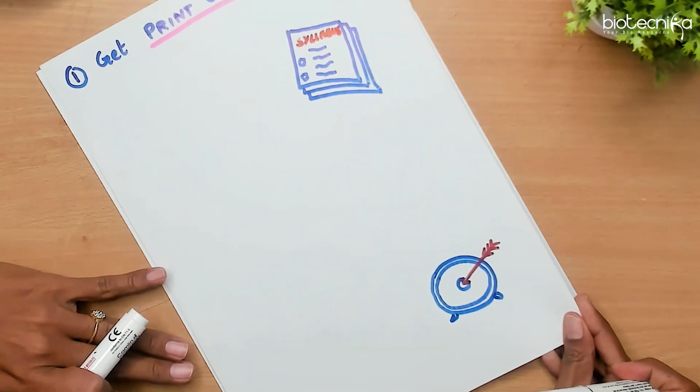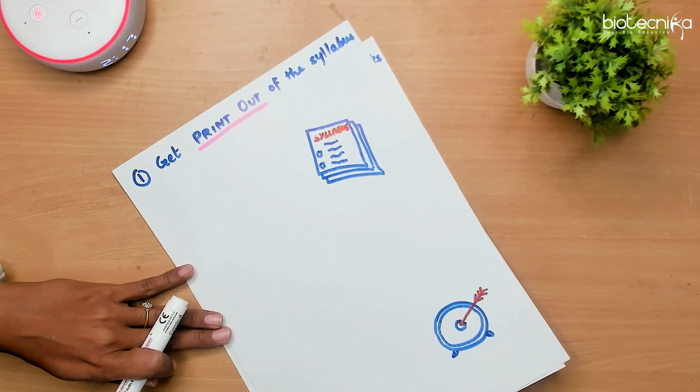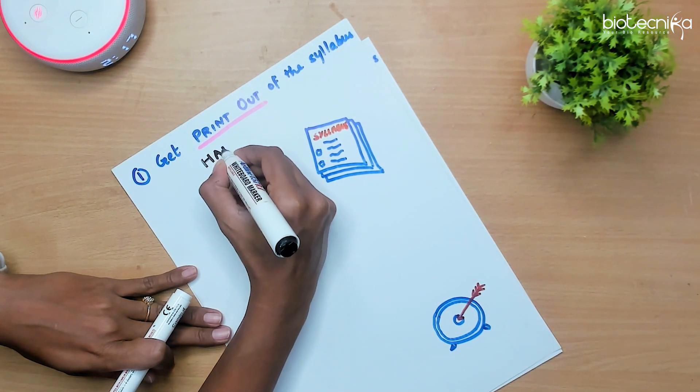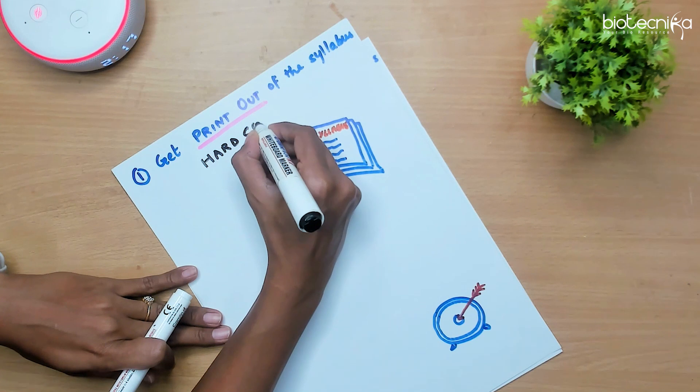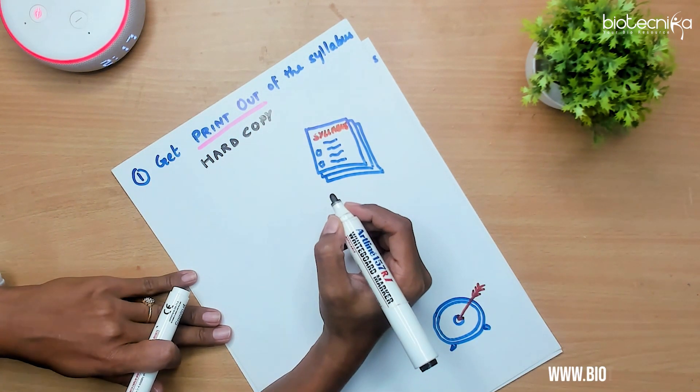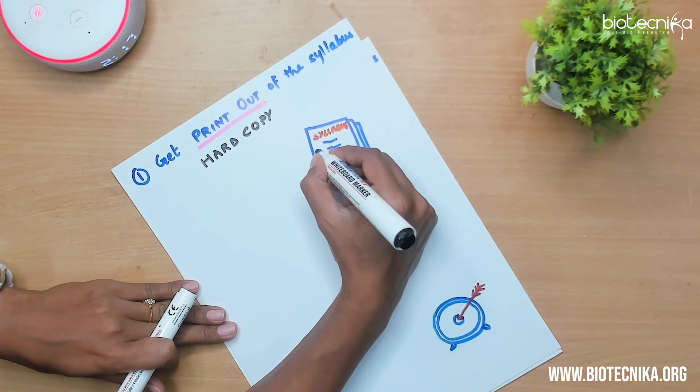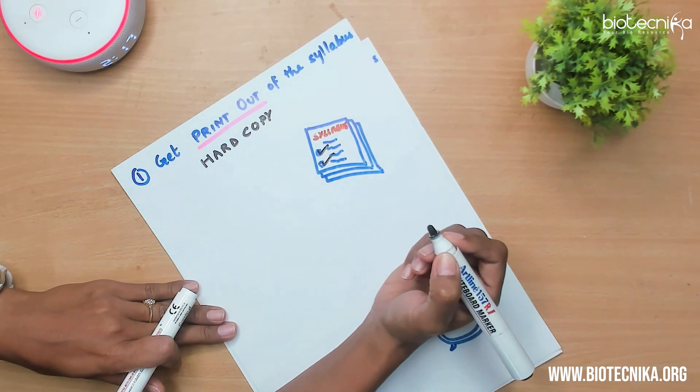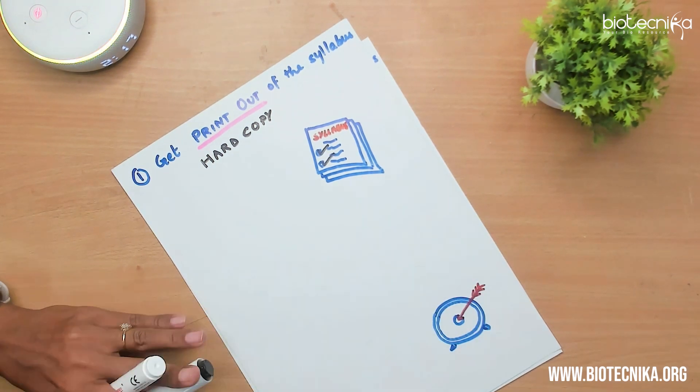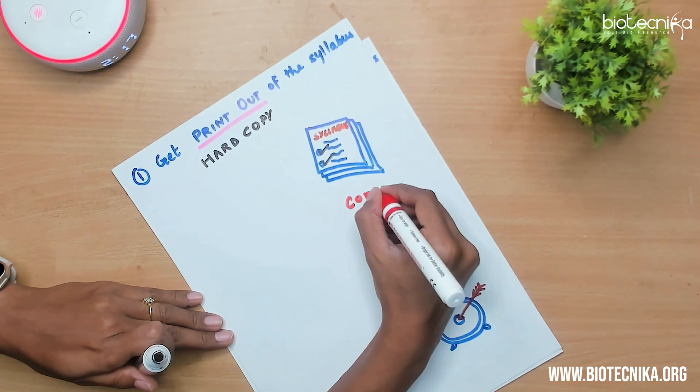Let's look at the first strategy. Get a printout of the syllabus. Yes, you heard me right. You need a hard copy, I am emphasizing on that. Why? You can make a checklist of the important topics and in fact once you finish a topic, ticking correspondingly after completing a topic several times will give you confidence and also a sense of accomplishment.